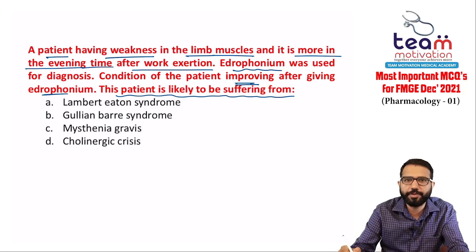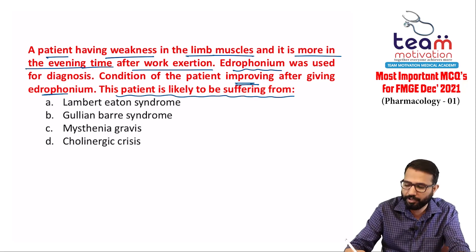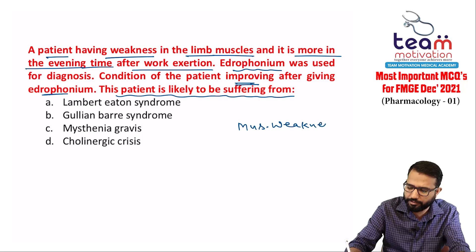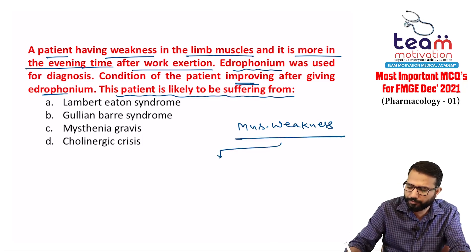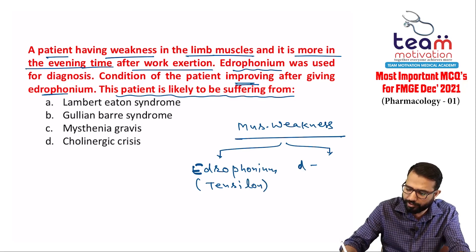This is a typical case of myasthenia gravis. The hint is edrophonium used for diagnosis and the condition improving. For diagnosis, we use two types of drugs: edrophonium (also called tensilon), and D-tubocurarine. These two drugs are opposite in their mechanism.